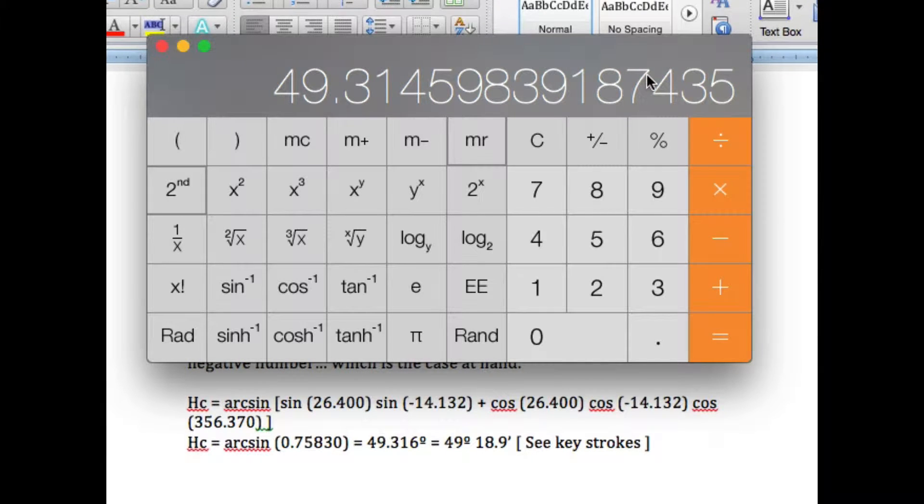Hello, this is David Birch at StarPath School of Navigation, and I want to carry on with the second part of doing a site reduction by calculator, direct calculation, and this is for finding the azimuth angle.